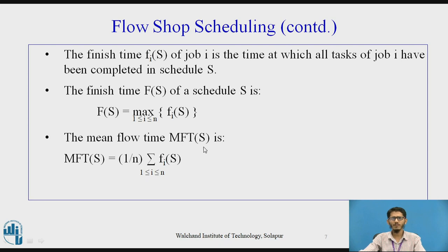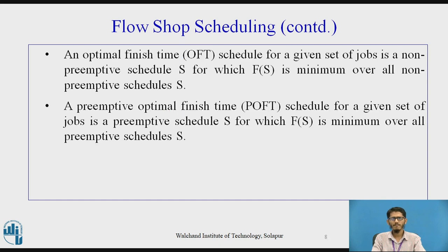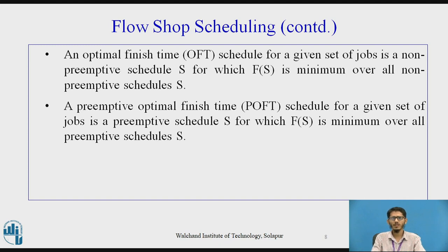The mean flow time of schedule S is given as (1/n) × summation of fi(S) where i ranges from 1 to n — this is the average finish time of all jobs. An optimal finish time (OFT) schedule for a given set of jobs is a non-preemptive schedule for which F(S) is minimum over all non-preemptive schedules. Similarly, a preemptive optimal finish time schedule is a preemptive schedule S for which F(S) is minimum over all preemptive schedules.